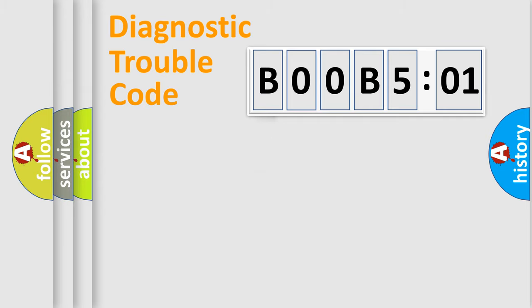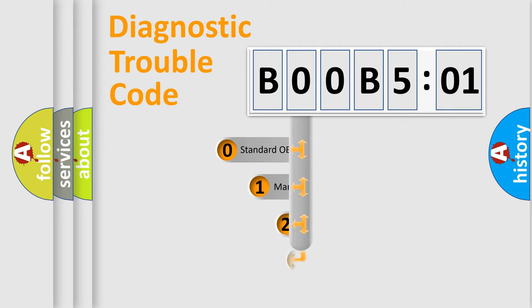Powertrain. Body. Chassis. Network. This distribution is defined in the first character code.